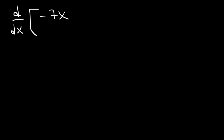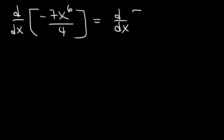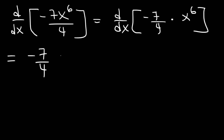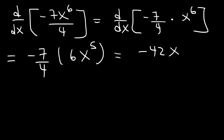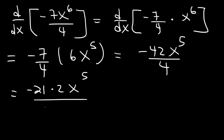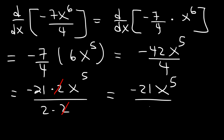What is the derivative of negative 7x to the 6 divided by 4? The constant is negative 7 over 4, and f(x) is x to the 6th power. We differentiate x to the 6th, which gives 6x to the 5th power. Negative 7 times 6 is negative 42. So we have negative 42x to the 5th divided by 4. Simplifying 42 over 4: 42 is 21 times 2, so we can cancel a 2. The final answer is negative 21x to the 5th power divided by 2.